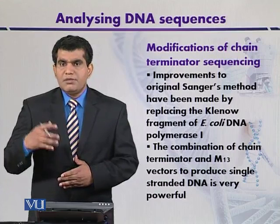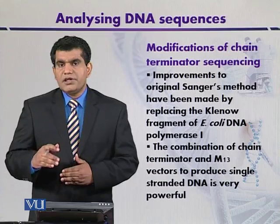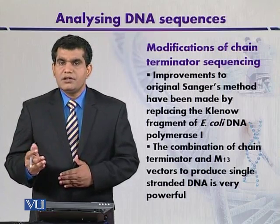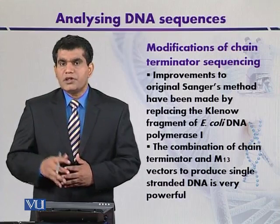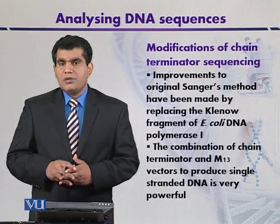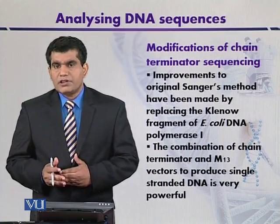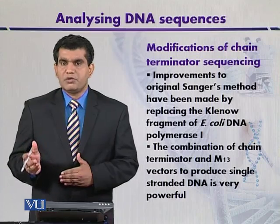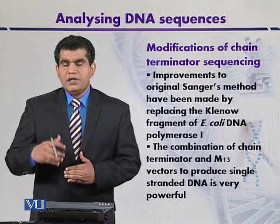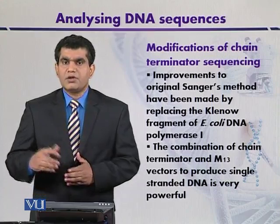Another modification was introduced where double-stranded DNA fragments can be used for sequencing. The double-stranded DNA can be denatured using alkali or high temperature during the sequencing process, and then neutralized. Using a specific primer, it can then be sequenced. This means that vectors like the M13MP series, which require a single-stranded DNA template, are no longer the only option. These were the different modifications introduced by various workers over time.